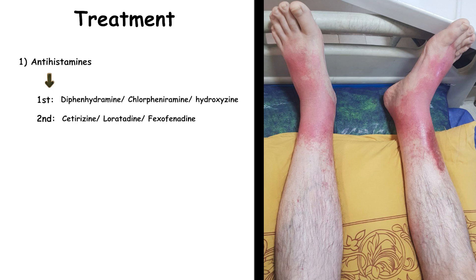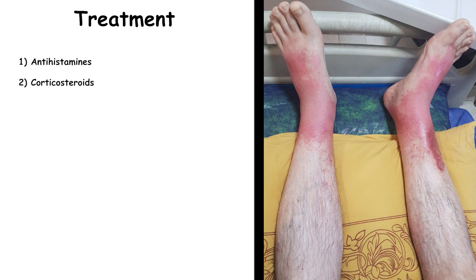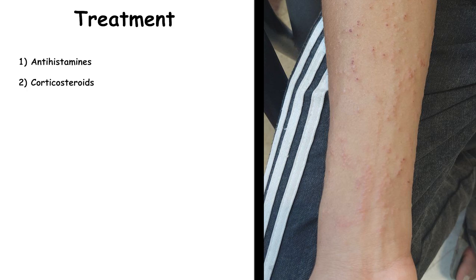The second class of medications are corticosteroids. They work by reducing inflammation and suppressing the immune response, making them effective for more severe or persistent allergic reactions. This type of medication is available in oral, topical, inhalation, and intravenous forms. They reduce inflammation, itching, redness, and swelling. However, be careful — long-term use of corticosteroids can lead to side effects such as weight gain, high blood pressure, osteoporosis, diabetes, cataracts, and sometimes increased risk of infections.